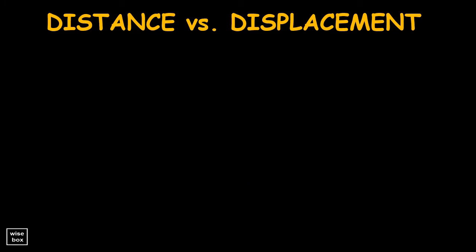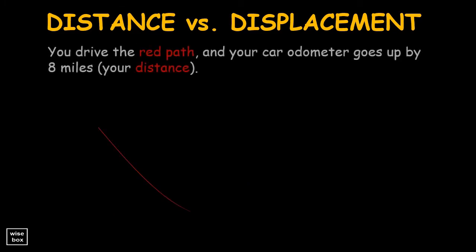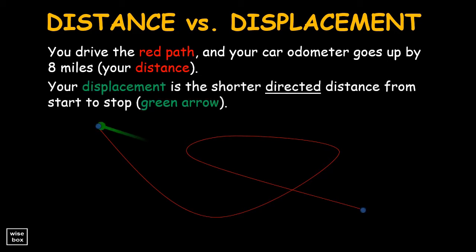Here is another one. You drive the red path, and your car odometer goes up by 8 miles — this is your distance. Your displacement, however, is the shorter directed distance from start to stop.